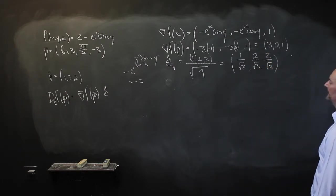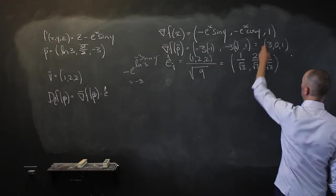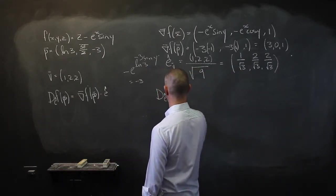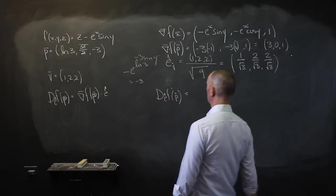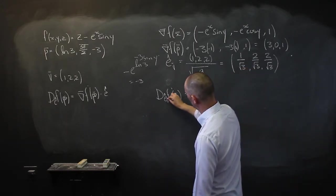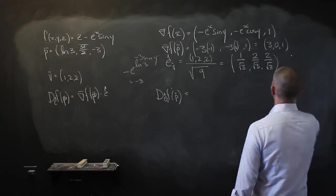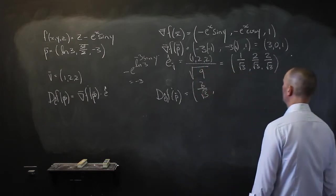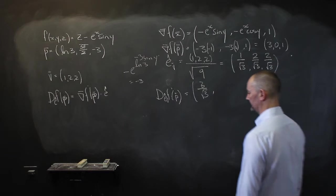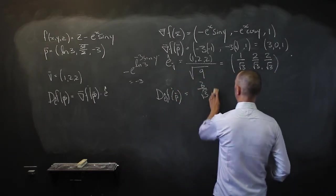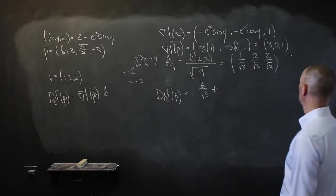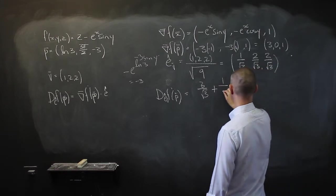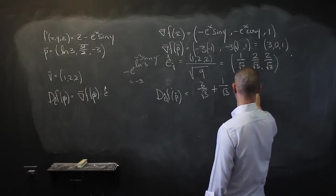All that's left is to take the dot product of these two. The directional derivative of f at point P in the direction v is: 3 times 1/3, plus 0 times 2/3 which is 0, plus 1 times 2/3. Wait — the square root of 9 is 3, not the square root of 3. So it's 1/3 components.